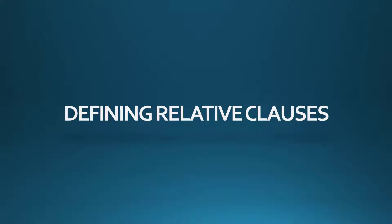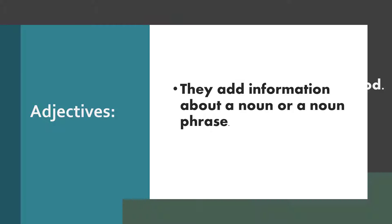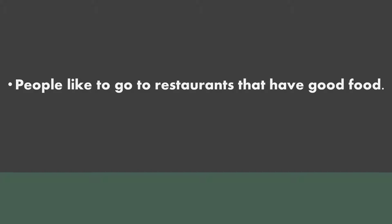Defining relative clauses function like adjectives because they add information about a noun or a noun phrase. They must always immediately follow the noun they describe. They give essential information about the noun. For example: people like to go to restaurants that have good food.